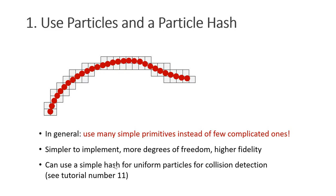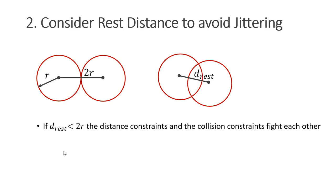Typically, we want the particles to be twice their radius apart from each other. However, sometimes the rest distance is smaller than 2r. In this case, the distance constraints and the collision constraints fight each other, which results in jittering. The solution to this problem is to set the collision distance to the minimum of 2r and the rest distance. It would require a lot of memory to store the rest distance from a particle to all its close neighbors. Instead, we compute the rest distance on the fly from the rest positions of the particles.